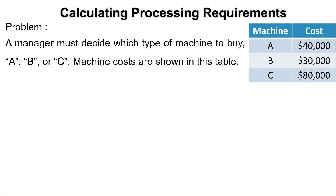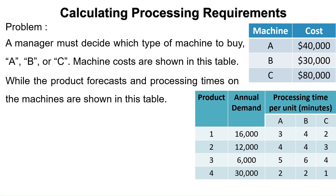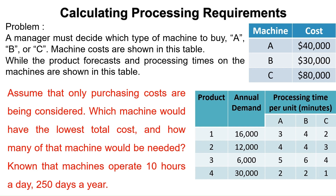A manager must decide which type of machine to buy: A, B, or C. Machine costs are shown in a table, while the product forecasts and processing times on the machines are shown in another table. Assume that only purchasing costs are being considered. Which machine would have the lowest total cost and how many of that machine would be needed? Machines operate 10 hours a day, 250 days a year.